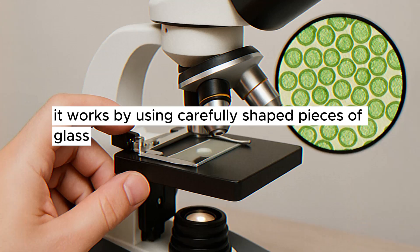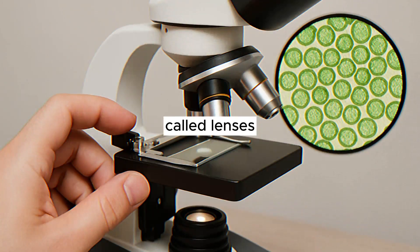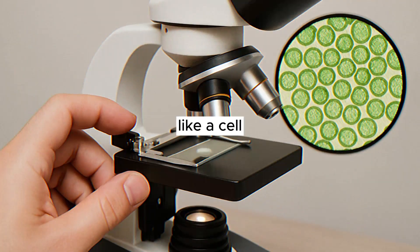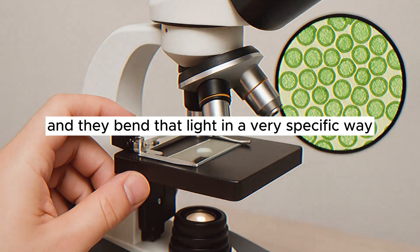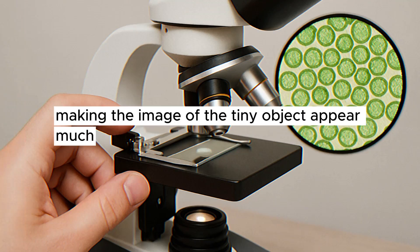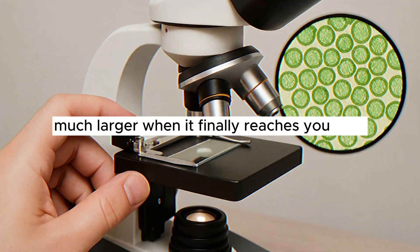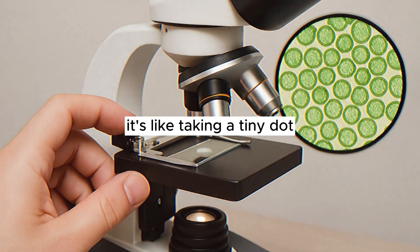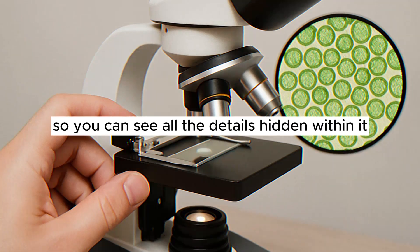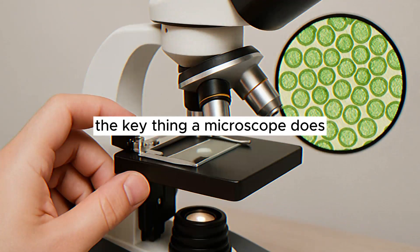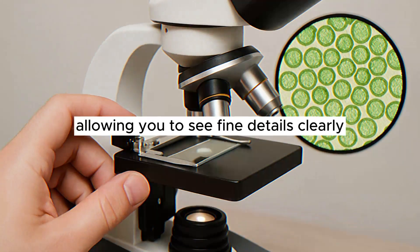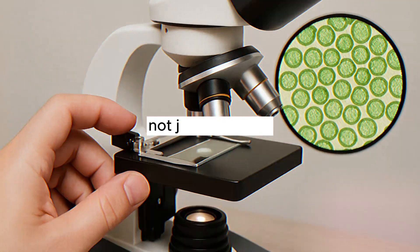It works by using carefully shaped pieces of glass called lenses. These lenses capture the light bouncing off or passing through a super tiny object, like a cell, and they bend that light in a very specific way. This bending action spreads the light rays out, making the image of the tiny object appear much, much larger when it finally reaches your eye. It's like taking a tiny dot and stretching its picture out over a bigger area so you can see all the details hidden within it. The key thing a microscope does is provide magnification, making the small look big, and resolution, allowing you to see fine details clearly, not just a big blur.